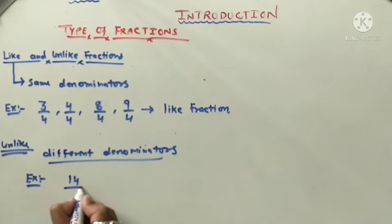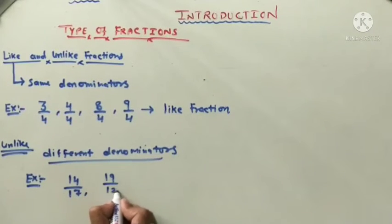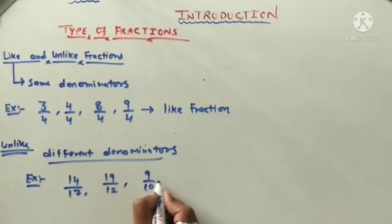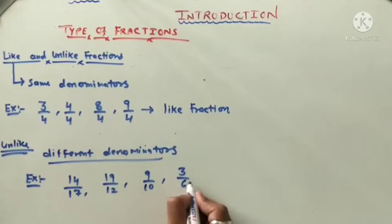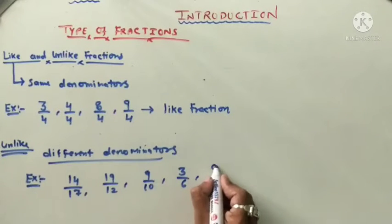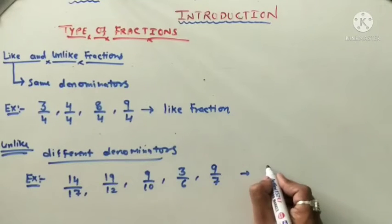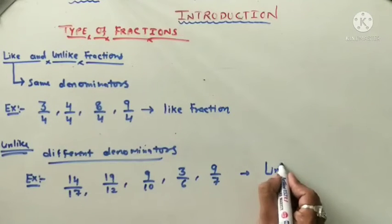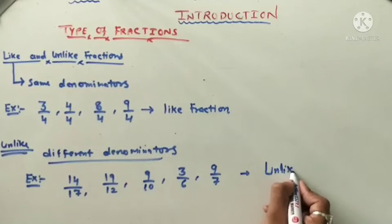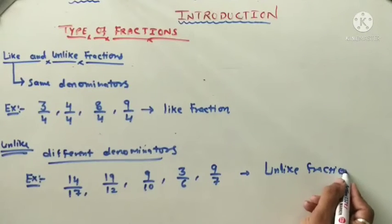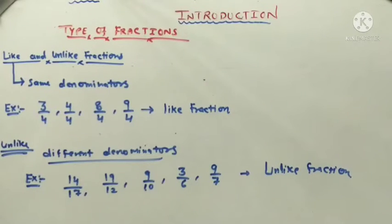For example of unlike fractions: 14 upon 17, 19 upon 12, 9 upon 10, 3 upon 6, 9 upon 7 — these are unlike fractions because they have different denominators.